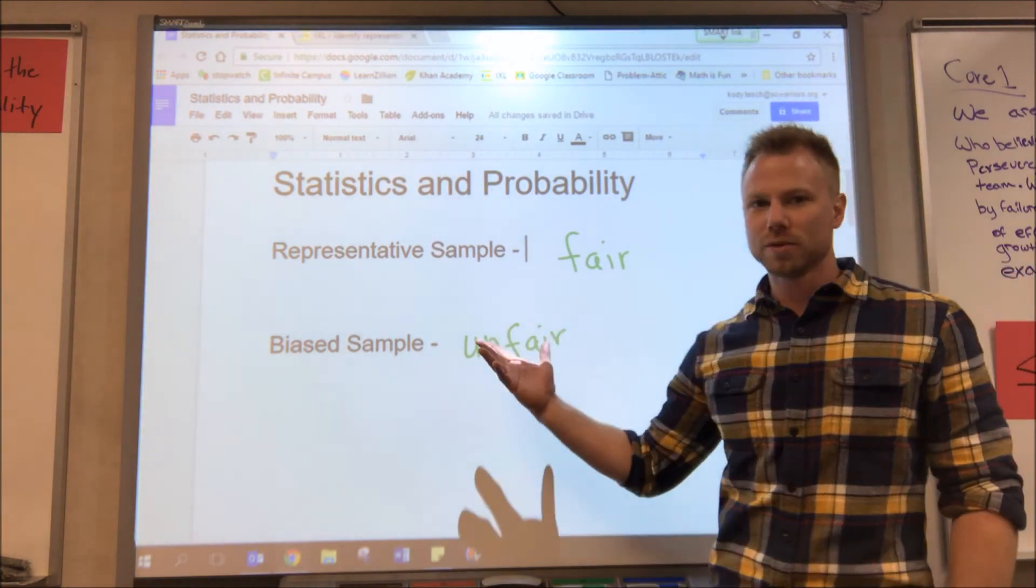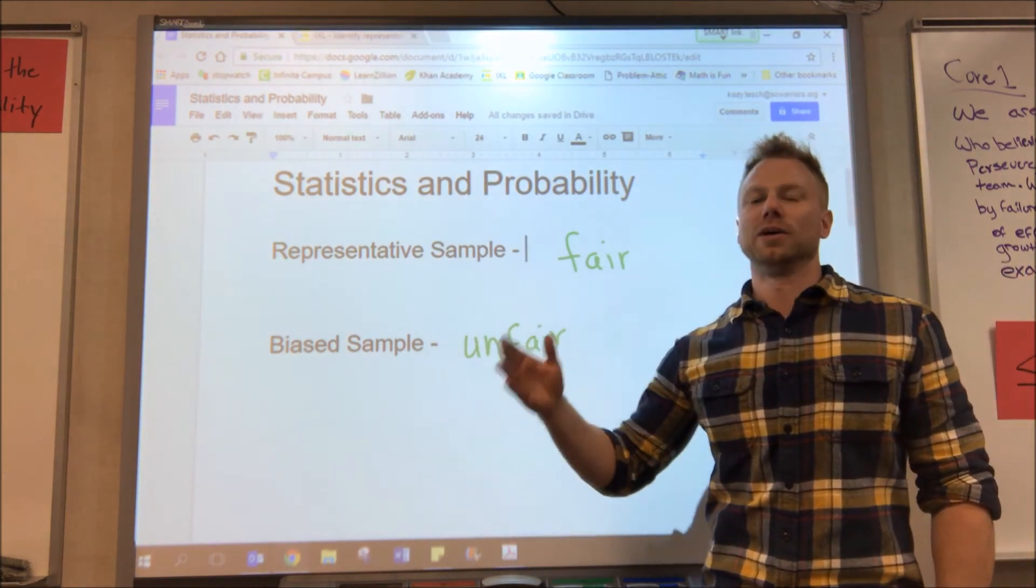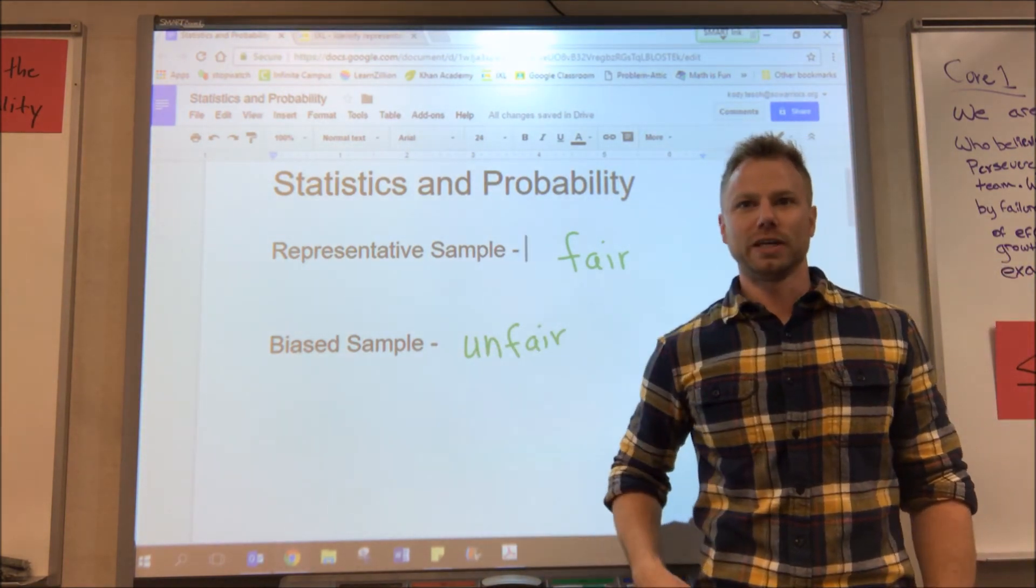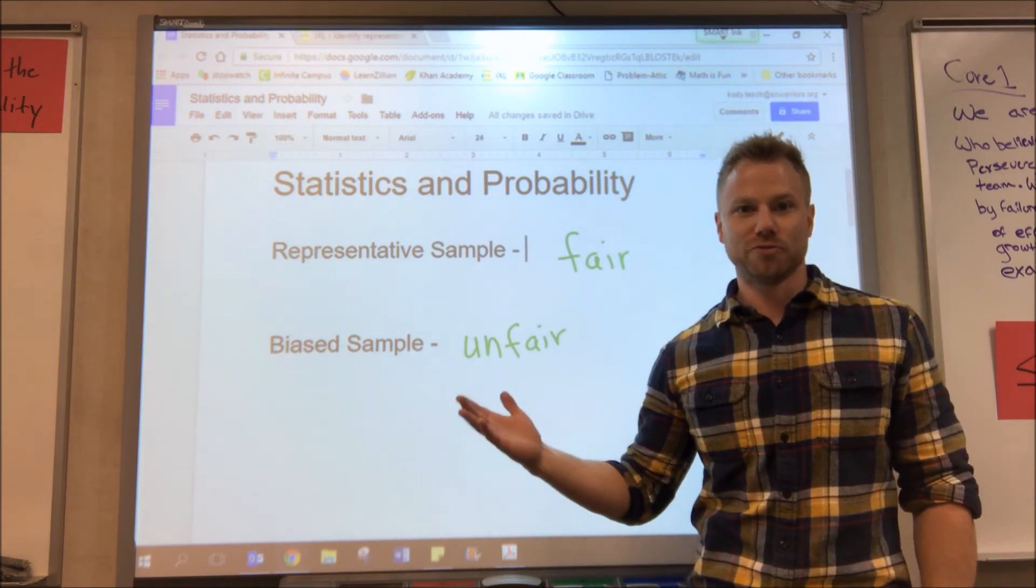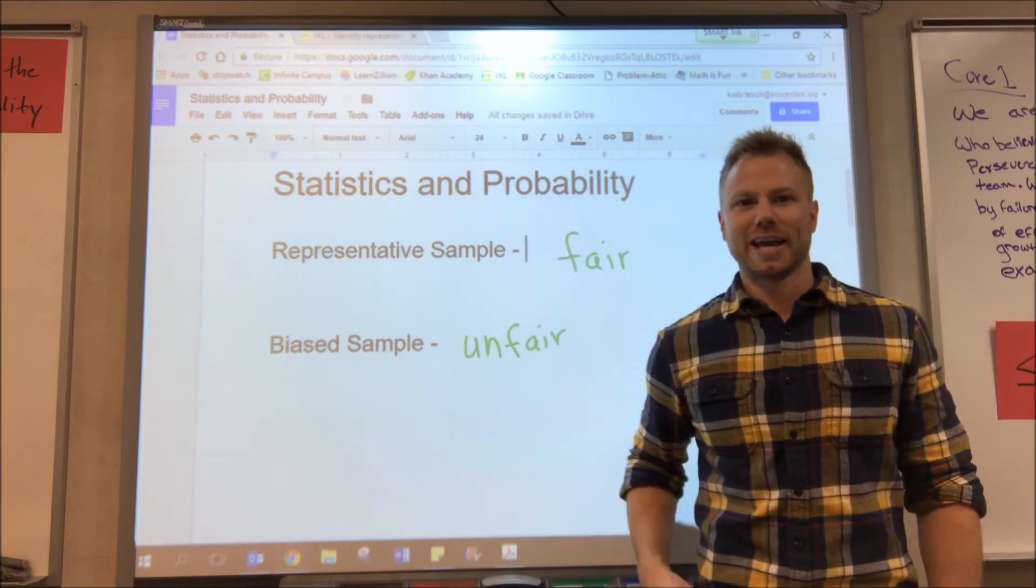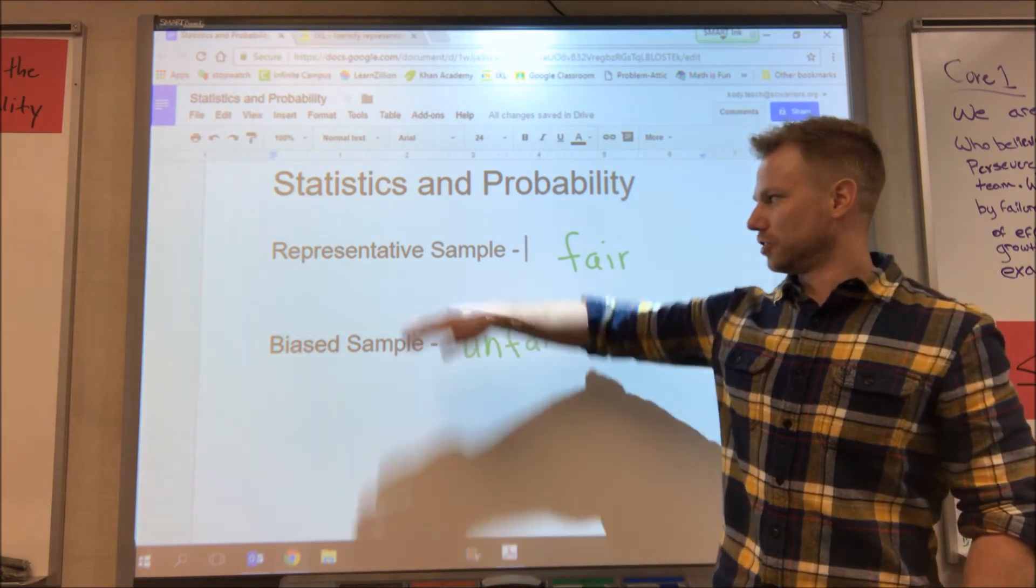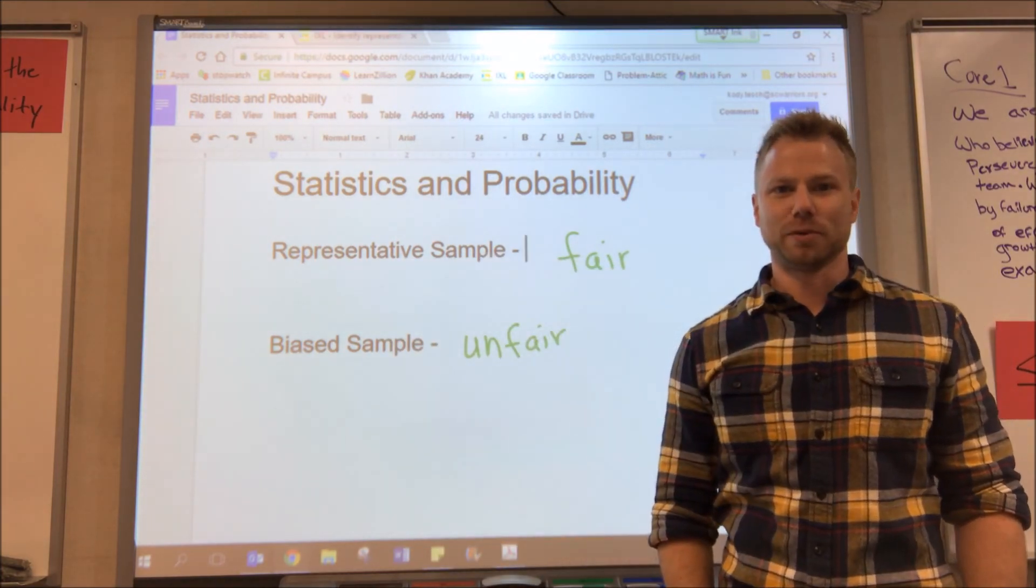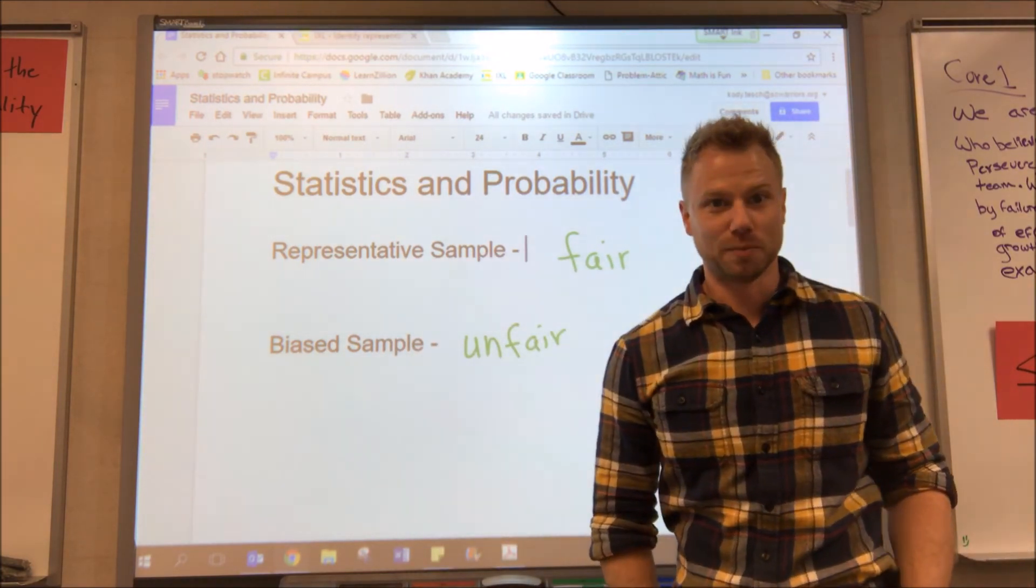So there's no formulas or anything yet, but we just have to be thinking about what kind of sampling would be fair where everyone has an equal chance of participation. That's called representative sampling. Alright, let's go on to some examples. That's it.